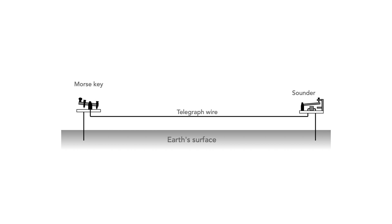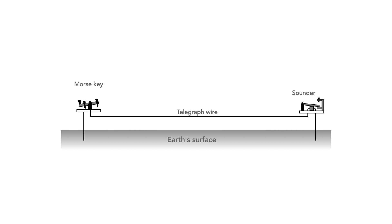Originally, Morse code was used with wire telegraph systems. A Morse key with a battery was used at one end, and when the key was pressed down it caused a current to flow in the wire, and then at the far end a sounder sounded and the message could be read.